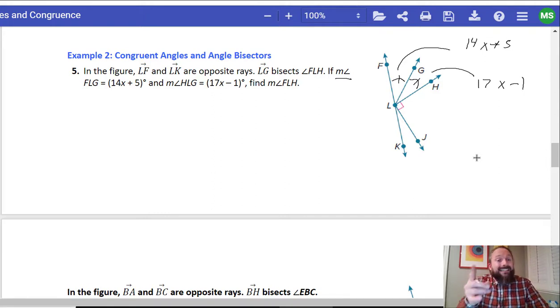All right. Well, what this is asking us to do is it's asking us to say, these are equal to each other because this is the angle bisector. So I could say, this 14X plus 5 is equal to 17X minus 1. So what this is really asking us to do is, solve for X. And then once we find X, understand that we're looking for the two angles put together. So let's do it.